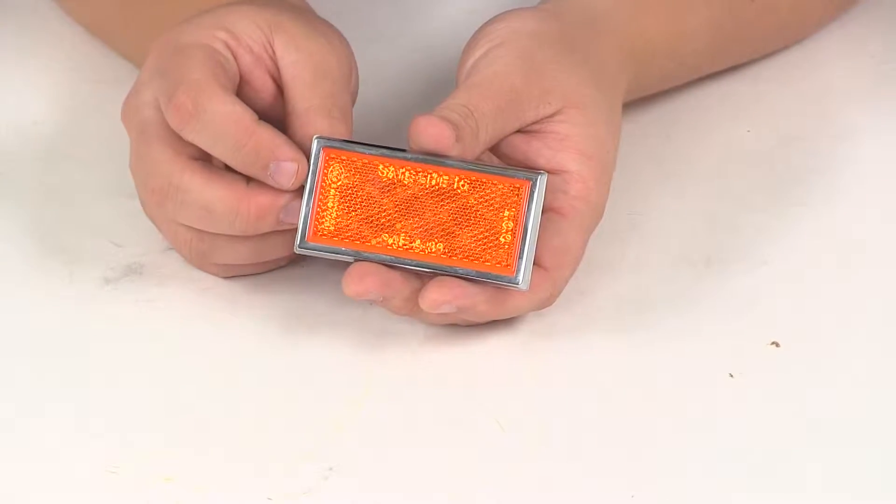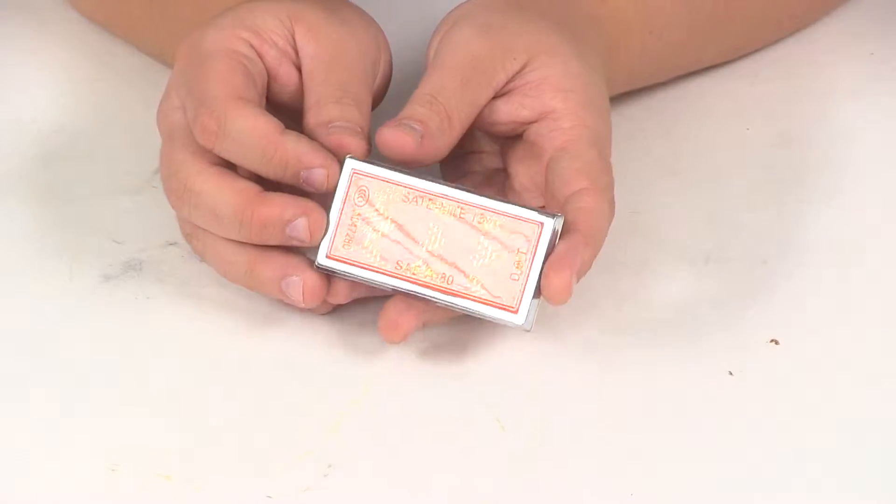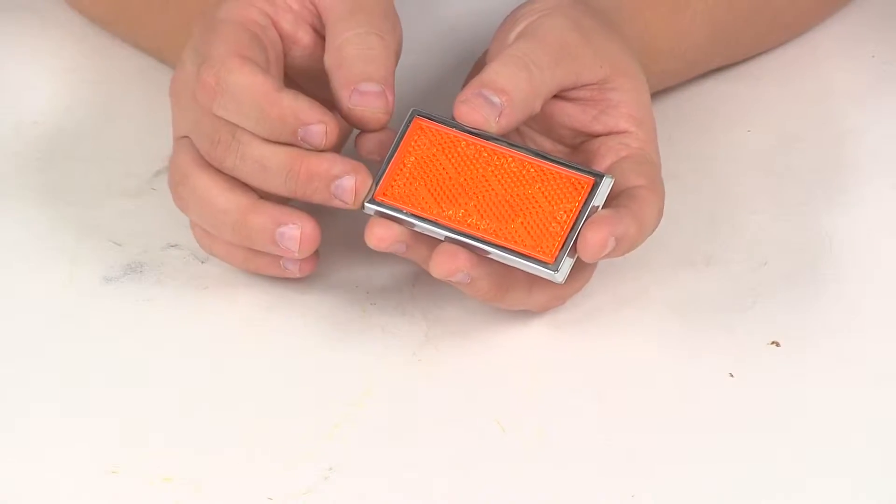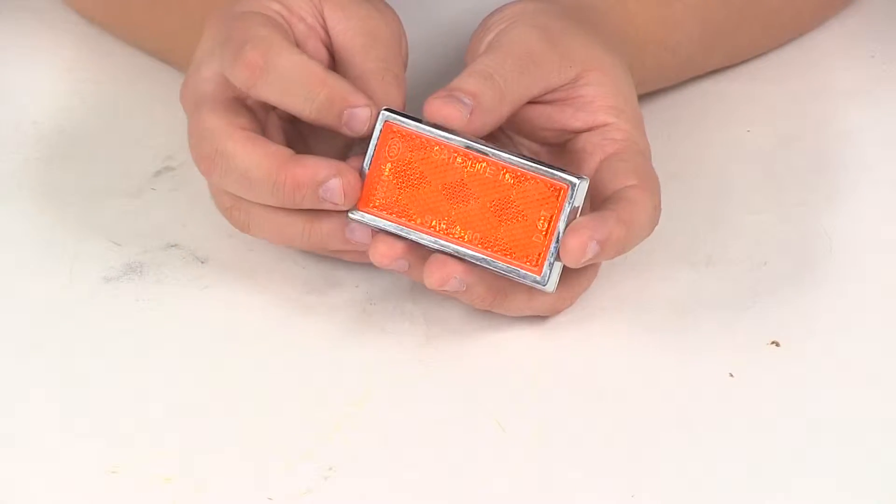Today we're going to be taking a look at part number B484A. This is the amber rectangular reflector from Peterson Trailer Lights. It's got the nice chrome trim piece that goes around the reflector. It gives it a nice clean finished look.